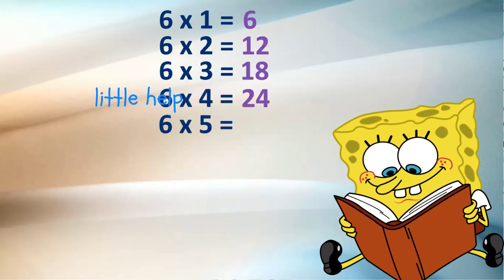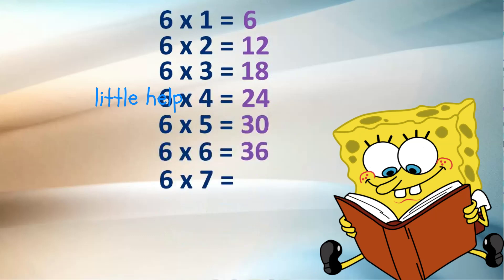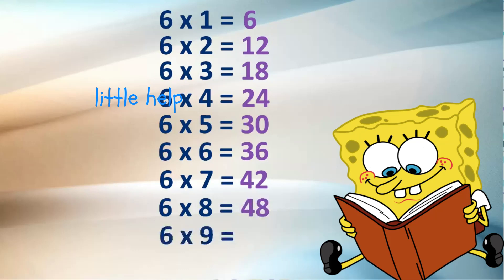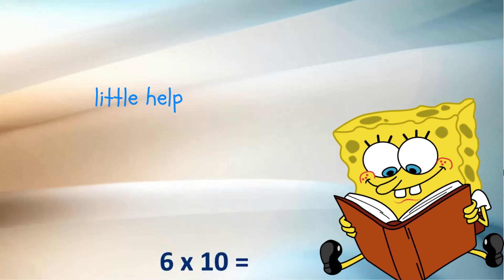6 fives are 30, 6 sixes are 36, 6 sevens are 42, 6 eights are 48, 6 nines are 54, 6 tens are 60. 6 tens are 60.